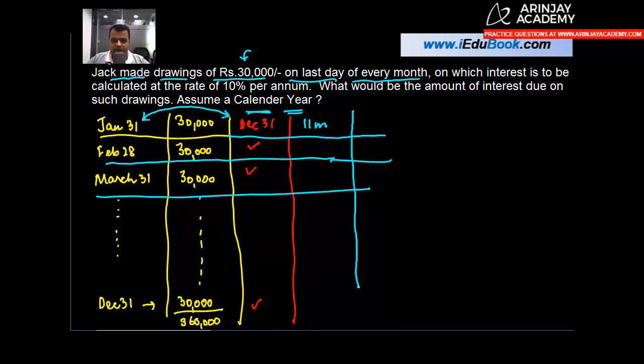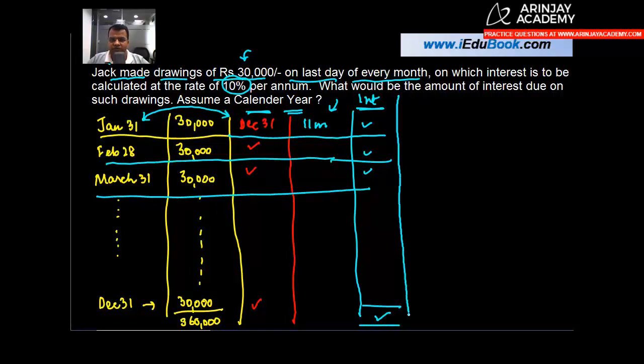The long method is you take each of these drawings, calculate the period for which these drawings have been used, and then add up the interest. So let's say for example you calculate on 30,000 for 11 months at the rate of 10% per annum which is given to you, and you get interest in respect of this single drawing. Similarly you get the interest for each of these drawings, add up the total and calculate the total interest on drawings.